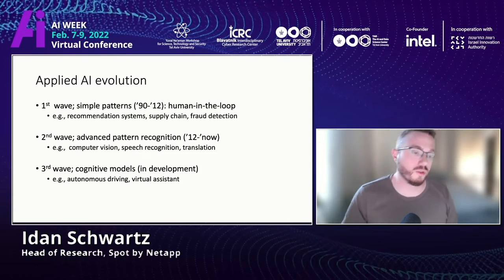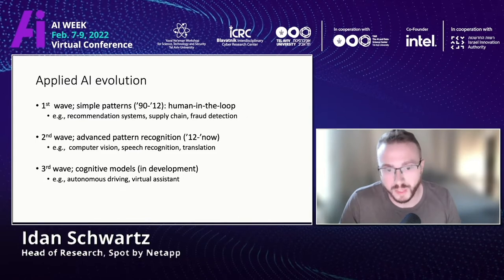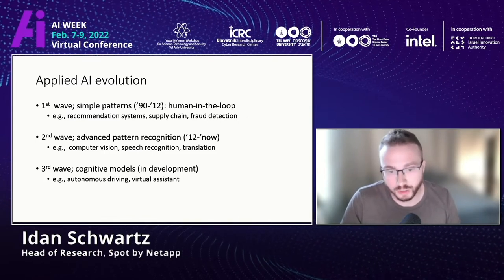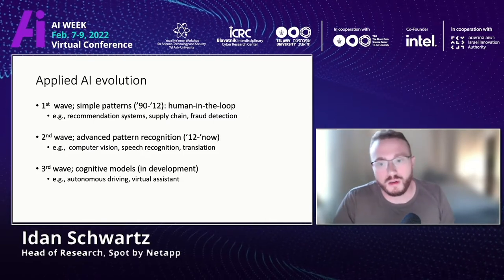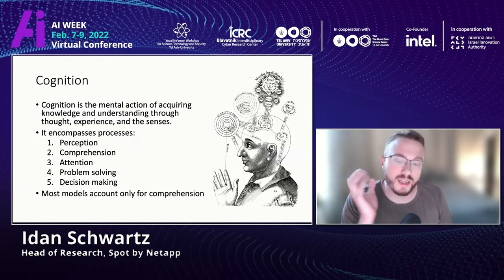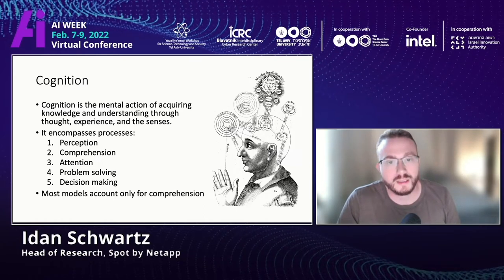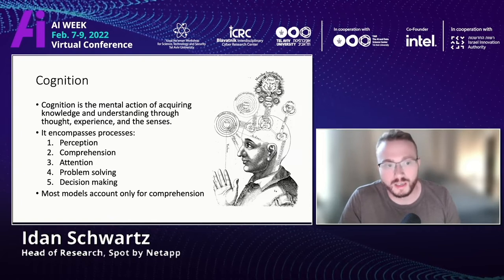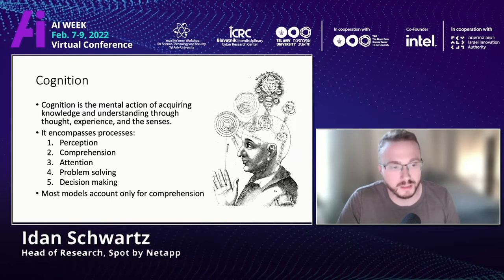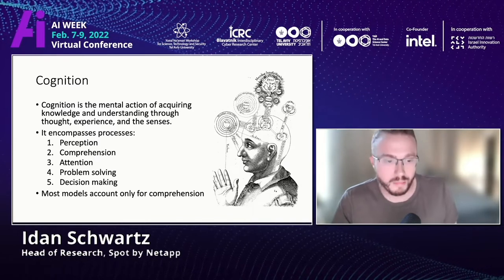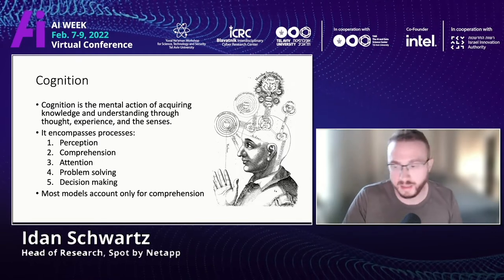Examples of real cognitive models are autonomous driving or virtual assistants. Cognitive models are models that don't have a human in them — they are expected to make decisions on their own without any human supervision. When we think about cognition, psychologists describe how humans acquire and understand knowledge using five elements: perception, comprehension, attention, problem solving, and decision making. In this talk, I will discuss how we should imitate those abilities with deep learning.